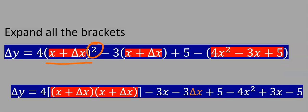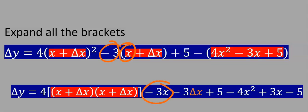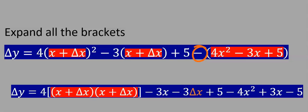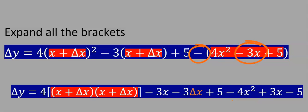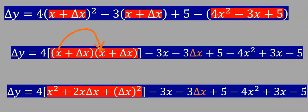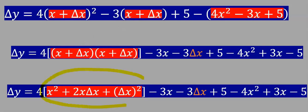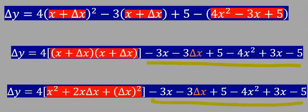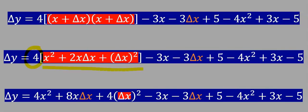Because of the squared term we get two of these terms. Then −3 multiplied by x gives −3x, and −3 multiplied by Δx gives −3Δx. The plus 5 remains. This minus will multiply 4x² giving −4x², and minus multiplied by −3x gives +3x, and minus multiplied by +5 gives −5. Distributing and expanding the bracket, adding up the middle terms, we get the expanded expression. Then 4 opens up the brackets: 4 times x² gives 4x², 4 times 2x·Δx gives 8x·Δx, and 4 times (Δx)² gives 4(Δx)².